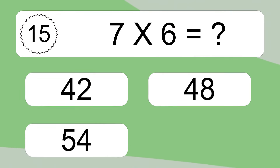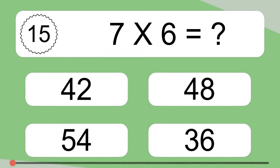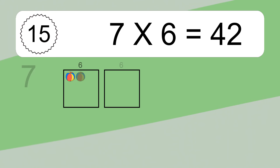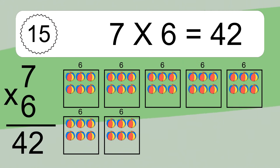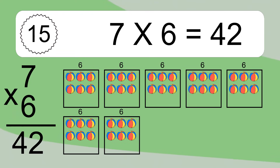7 times 6 equals what? 7 times 6 equals 42. We have 7 boxes and each box has 6 colorful balls inside. If you count all the balls in all the boxes together, you will have 7 times 6 balls. This equals 42 balls.